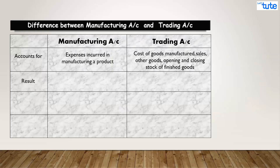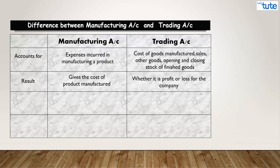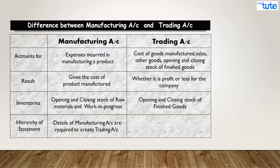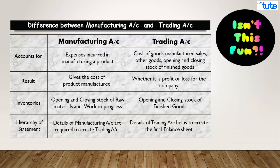The third difference is inventories: manufacturing account discloses the opening and closing stocks of raw material and work in progress, whereas trading account discloses only the opening and closing stocks of finished goods. The fourth difference is the hierarchy of statements: manufacturing account details are required to create the trading account, and details of the trading account help to create the final balance sheet of the company.